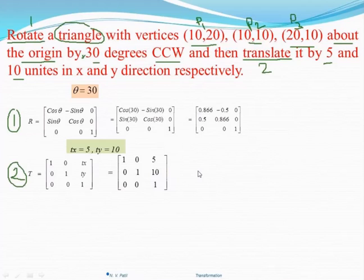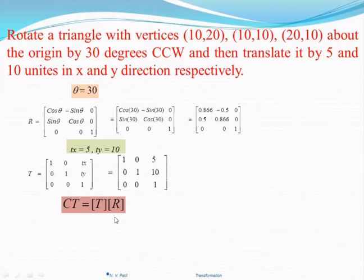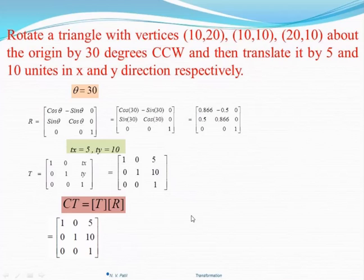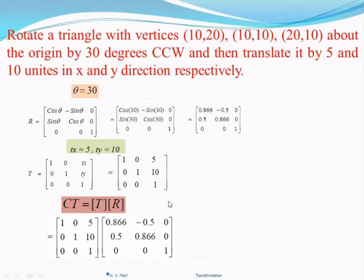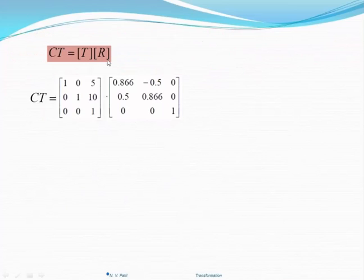Now we have these two transformations. We need to calculate the composite transformation, which is the concatenated transformation, given by CT. We start calculating: CT = Translation × Rotation, because translation is the last transformation and rotation is the first. Putting the translation matrix multiplied by the rotation matrix, when you multiply these two you will get CT. You need to consider row 1 into column 1, then row 1 into column 2, row 1 into column 3, and so on to get each element.